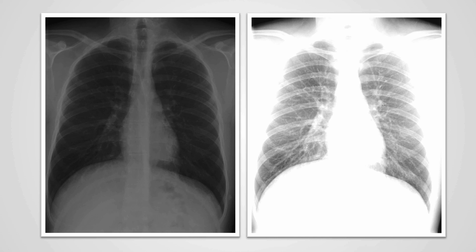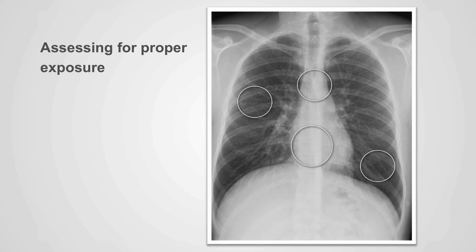Underexposure also causes a loss of anatomical detail — the underexposed image will look too white everywhere. To assess for proper exposure, we identify four key areas. Within the upper mediastinum, we should be able to clearly identify the trachea and the carina. Within the lower mediastinum, we should be able to identify the thoracic vertebra and disc spaces, and the blood vessels behind the heart. We also look within the parenchyma of the mid lungs to make sure that we can identify vascular markings, and in the lung bases to make sure we can identify the blood vessels clearly.